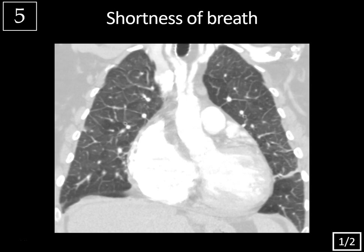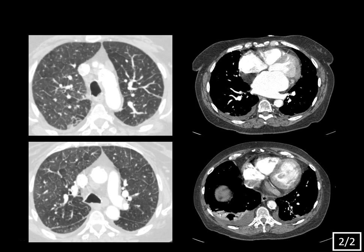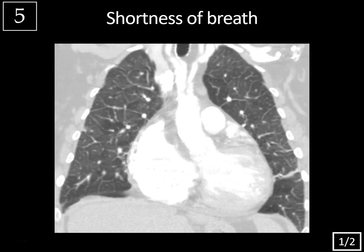Last case, history of shortness of breath, coronal reformat. We're looking at a coronally formatted view of the chest with lung windows, and notice how there's extensive smooth interlobular septal thickening outlining the secondary pulmonary lobule — all these little polygons of the secondary pulmonary lobule. The secondary pulmonary lobule is the smallest unit you can see on chest CT. Centrally, this lobule will have the pulmonary artery and the bronchial, and peripherally, you have the pulmonary veins and the lymphatics.